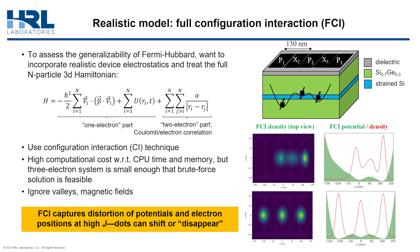You'll often hear of FCI being referred to as an exact solution, but that's not really true. The accuracy of FCI does depend on the span of the underlying single-particle basis set, as well as the mesh discretization — so-called discretization error. Note also that we're using an effective mass Hamiltonian, and the lattice is not necessarily being modeled atomistically.